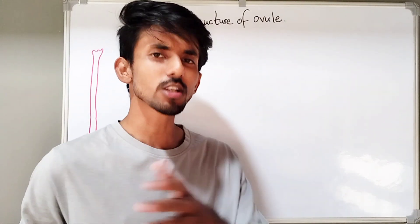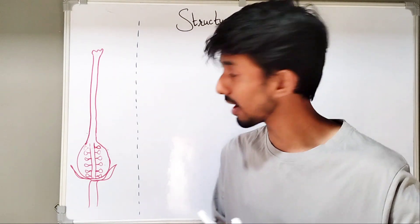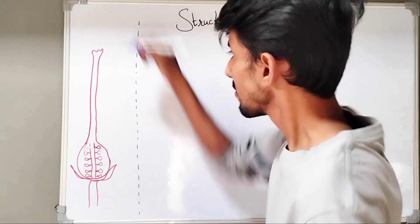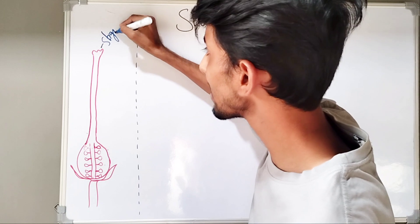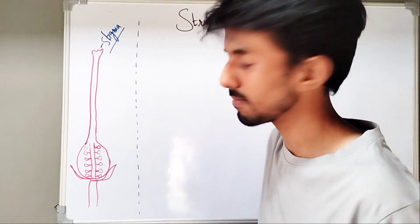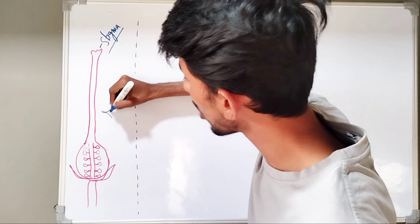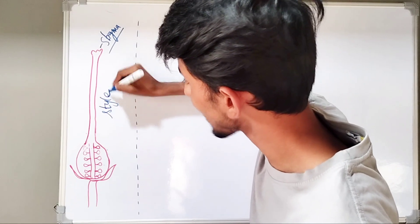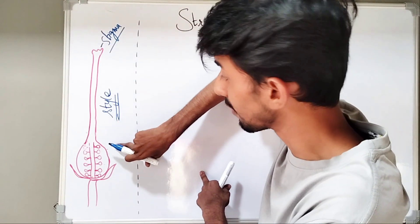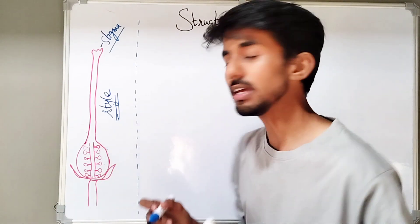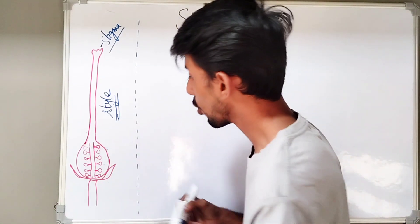First of all, let's see the female reproductive parts in the flower. Firstly, we have the stigma. Stigma is the region where pollen grains are received. Then the stigma opens into a long tube-like structure which is called as the style. The style finally terminates into the ovary. Inside the ovary, we have the main components which are the ovules.